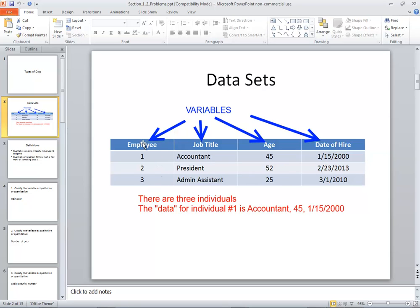The variables are the employee, job title, age, date of hire. For this particular data set, there's three individuals: Employee 1, Employee 2, Employee 3. The data for Individual 1 is Accountant, 45, and then 1/15/2000.